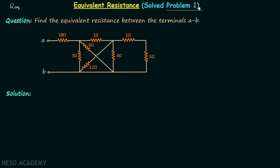In problem number one, we are required to find the equivalent resistance between the terminals A and B. Looking at the given network, we identify terminal A and terminal B, and we want to calculate the equivalent resistance R sub AB — that is, a single resistor representing all these resistors together.